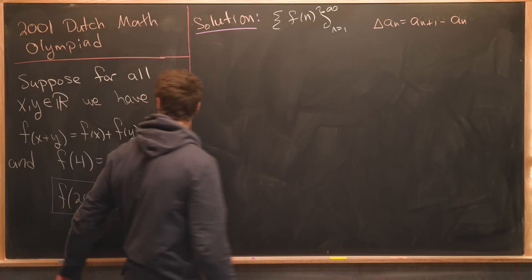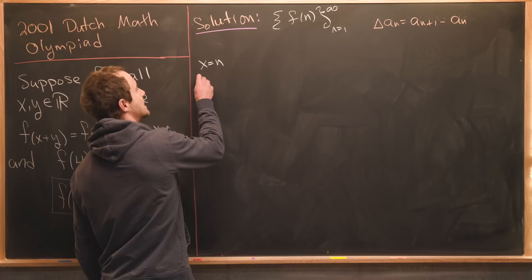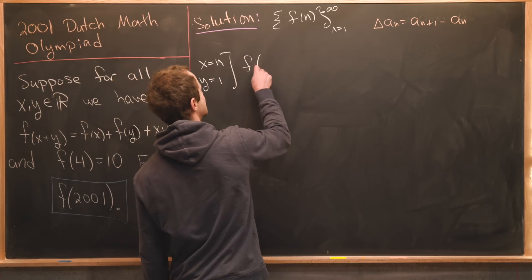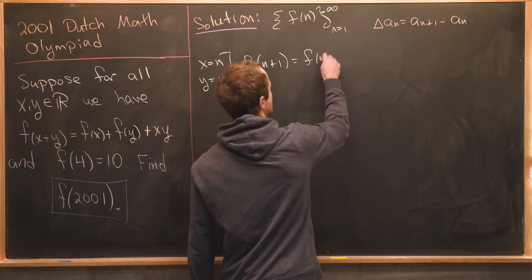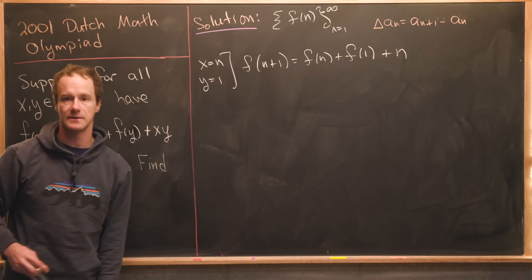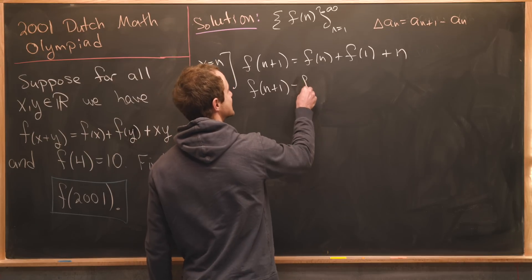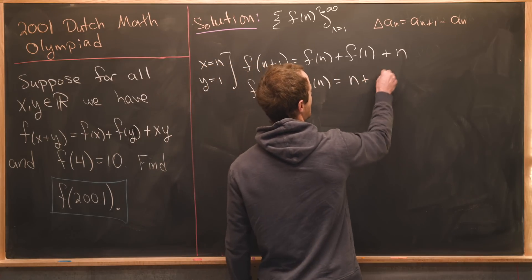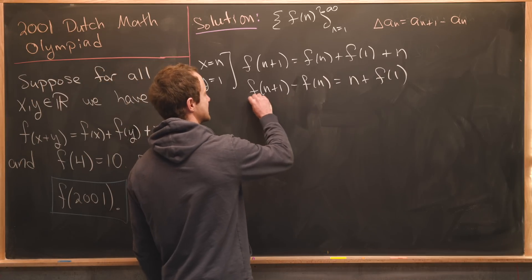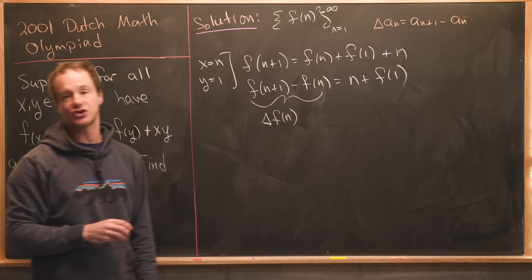We can do that by taking our functional equation and setting x equal to n and y equal to one. That'll give us f of n plus one equals f of n plus f of one plus n, again just using this functional equation. But now subtracting f of n from both sides we see f of n plus one minus f of n equals n plus f of one. We can rewrite this left hand side as this forward difference operator of our function f of n.